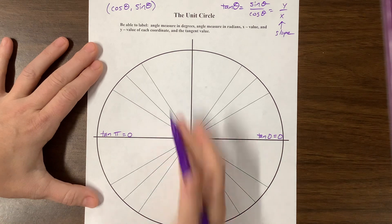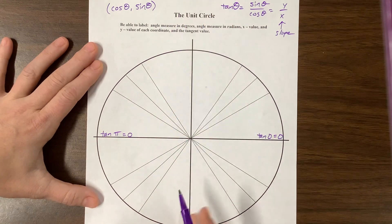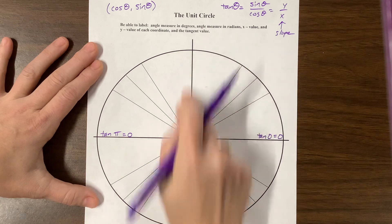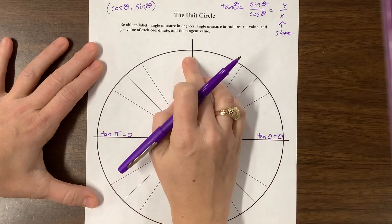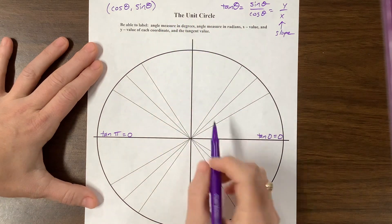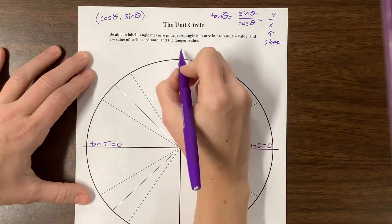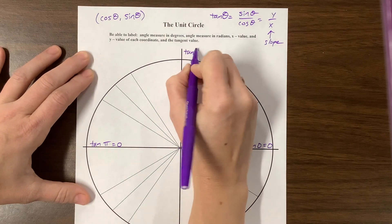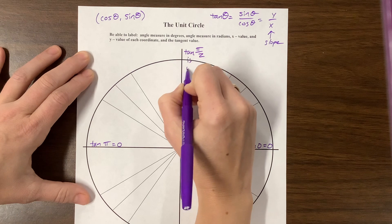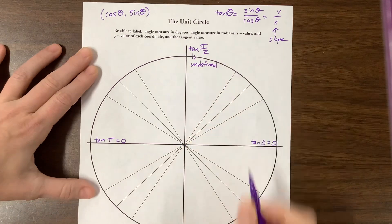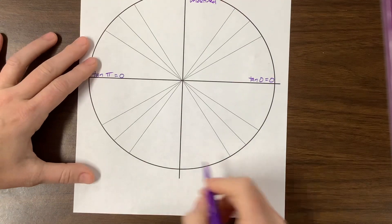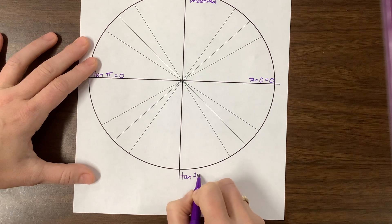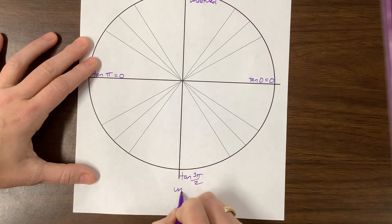Likewise, then I would hold up my arm in a vertical line and ask my students, and ask everybody, what is the slope of that line? Well, the slope of that line is undefined. And so we know that tangent of pi over 2 is undefined. And likewise, tangent of 3 pi over 2 is also undefined.